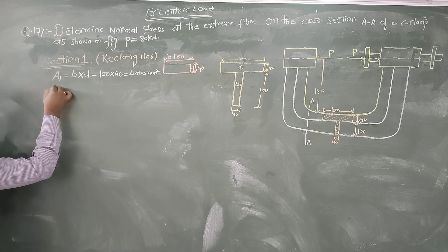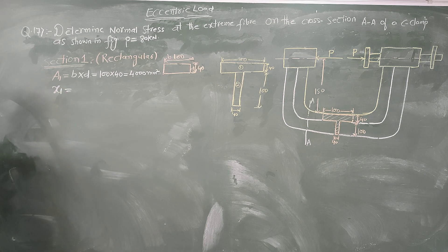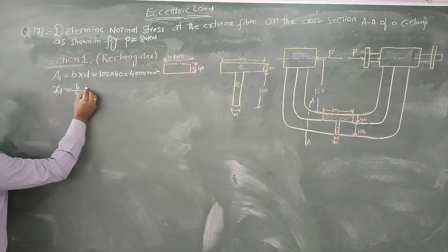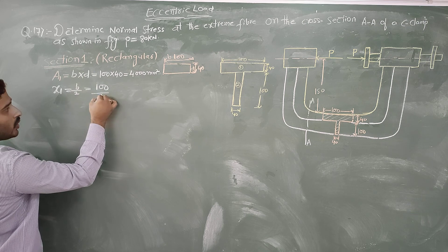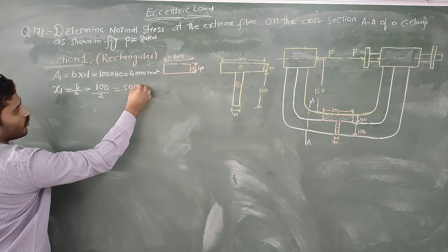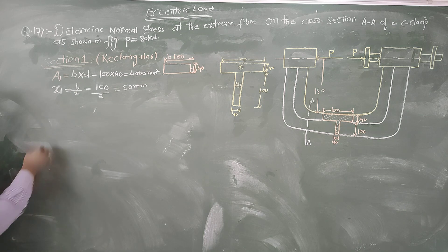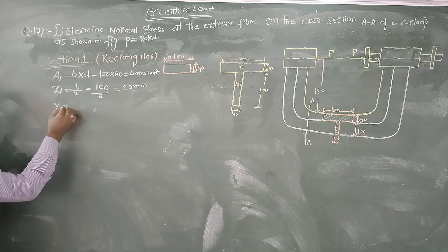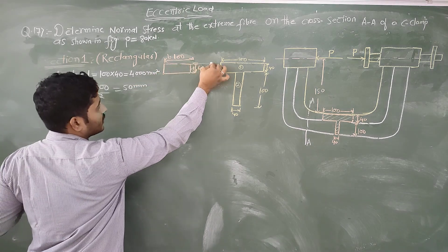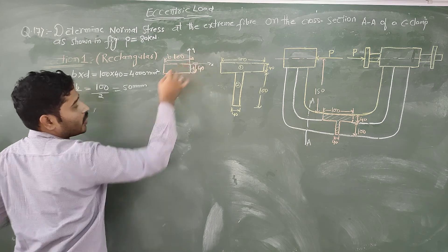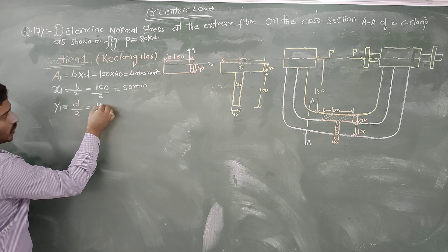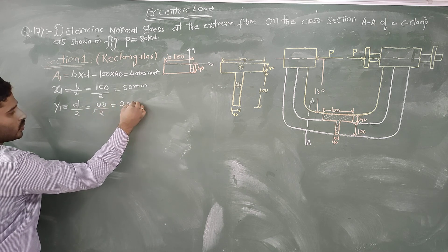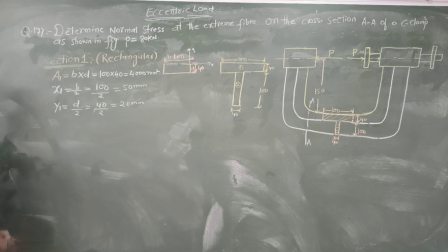We need to find out the value of x1. x1 is nothing but breadth divided by 2. Breadth is given as 100, so x1 = 100/2 = 50 mm. For the vertical axis, y1 = depth/2 = 40/2 = 20 mm. Section 1 is completed.